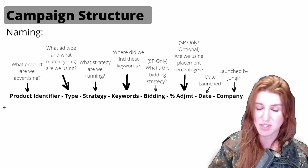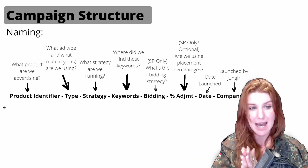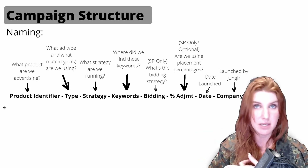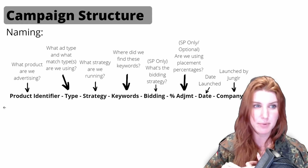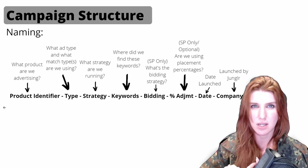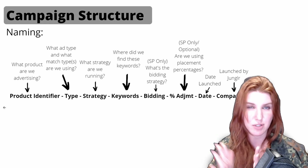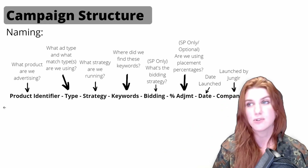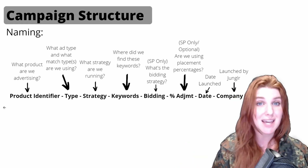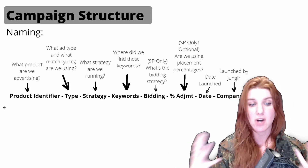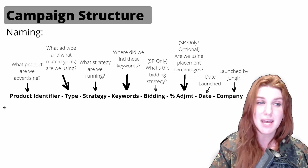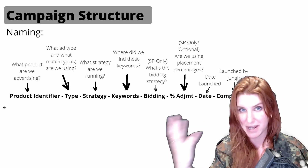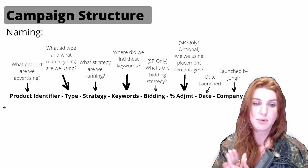The second part is the ad type and match type. We use abbreviations: SP for sponsored products, SB for sponsored brands, and SBV for sponsored brands video. For match types, we use E for exact, P for phrase, B for broad, B-plus for modified broad match — which is most beneficial in sponsored brand ads — PT for product targeting, and CT for category targeting. You might also have audience types in here for sponsored display.